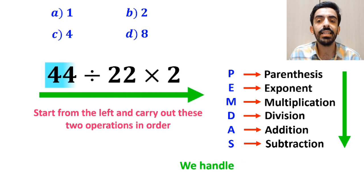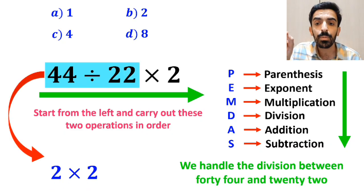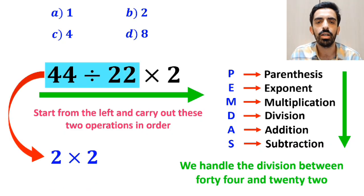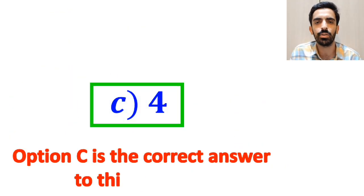So, first we handle the division between 44 and 22, which simplifies this expression to 2 multiplied by 2. And finally, the answer becomes 4. Therefore, option C is the correct answer to this question.